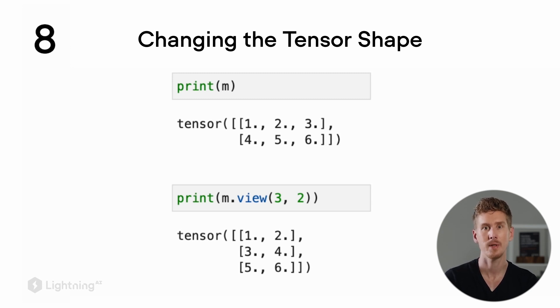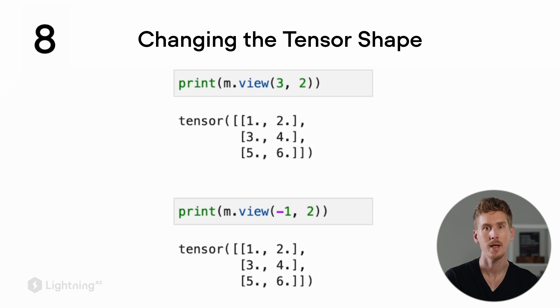Using .view, we reshape this tensor from a 2x3-dimensional tensor into a 3x2-dimensional tensor. When we use .view, there's a magic placeholder called -1. If we use -1, this dimension will be determined automatically.